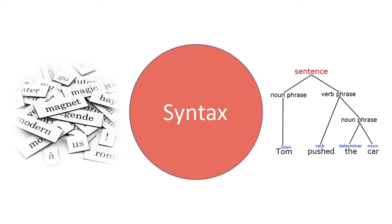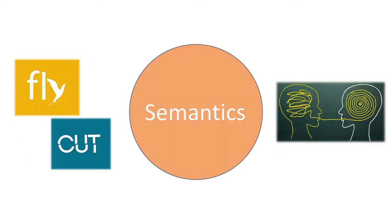Up to this point, each level of analysis has focused on patterns and rules that govern how language fits together. However, language wouldn't be useful at all if these patterns didn't have any meaning. This is studied in the field of semantics, which looks at the connection between language and what it represents — be it physical objects, emotions, thoughts, or concepts.